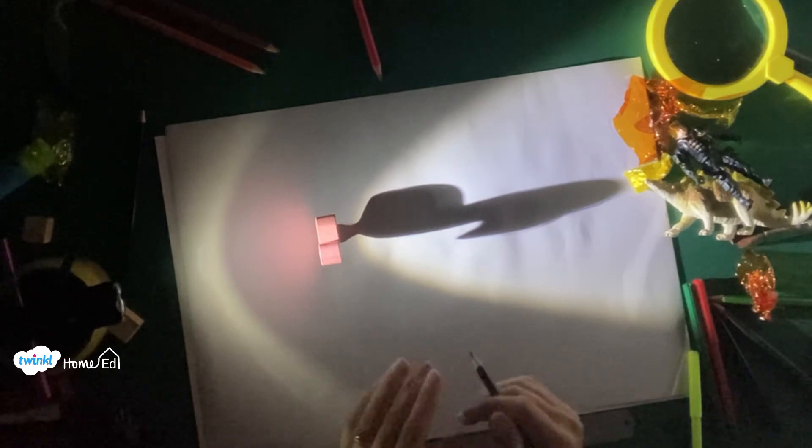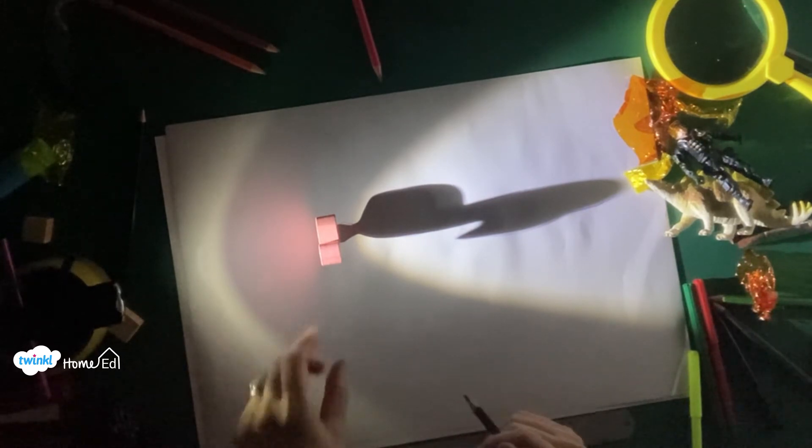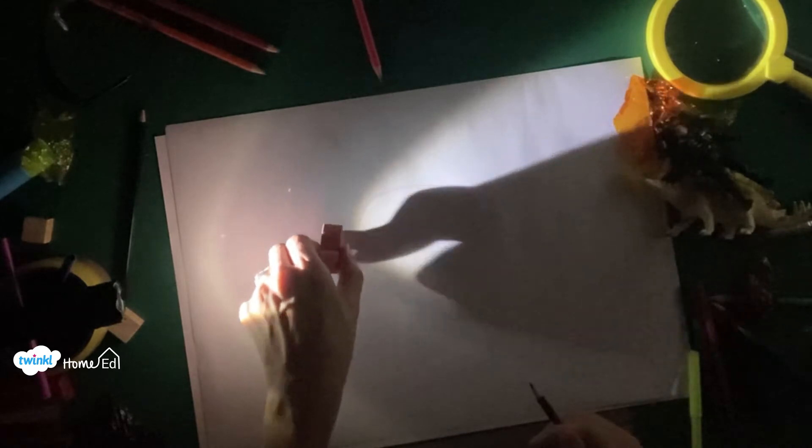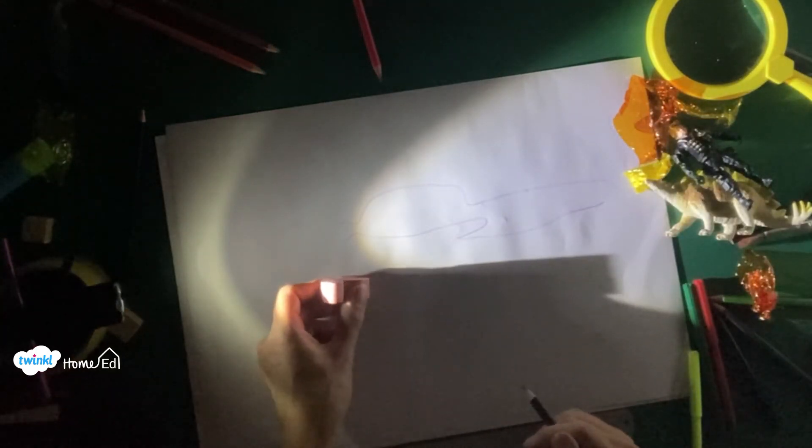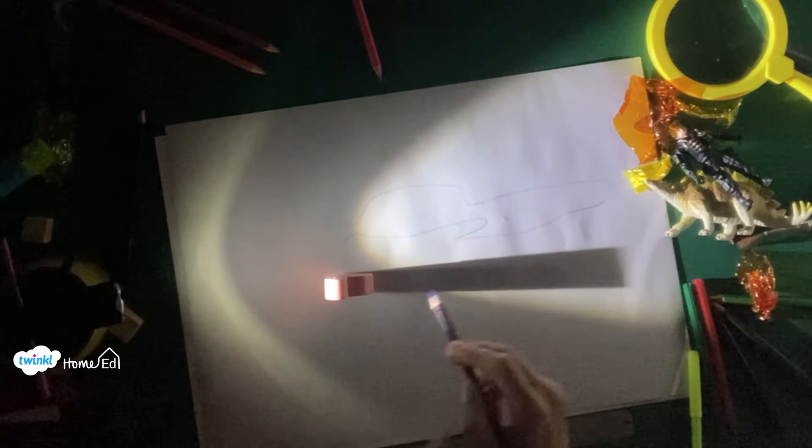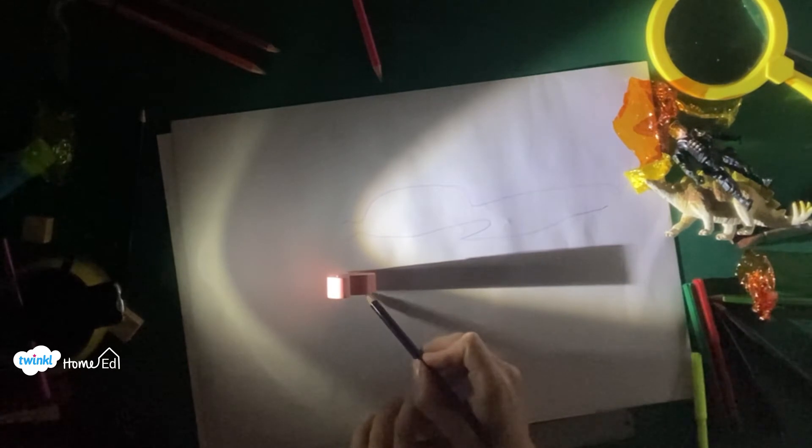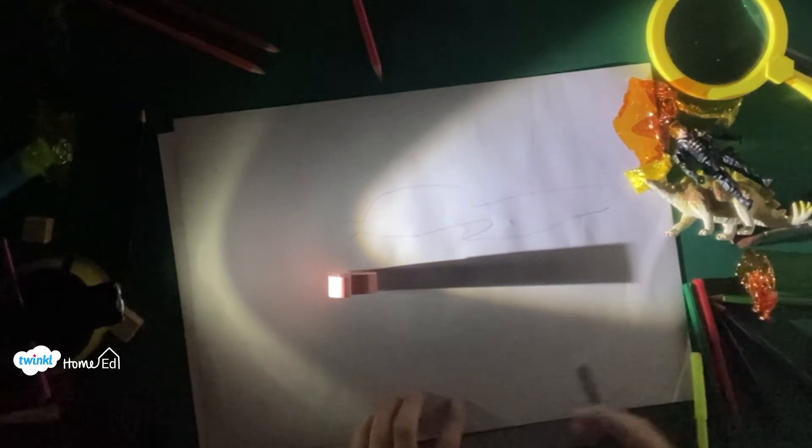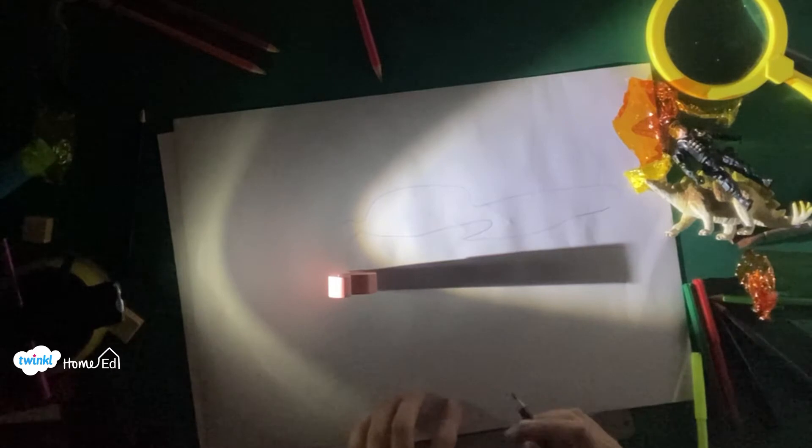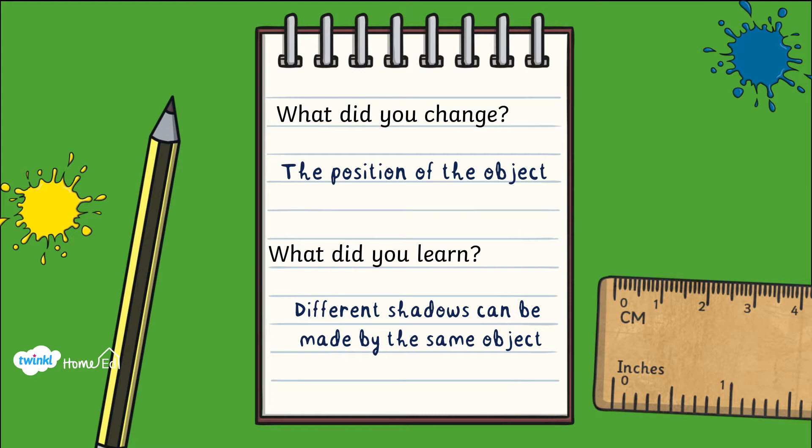Now what could we change with this experiment? Well I've already done how far away the light could go, so this time I'm actually going to change which way my object is facing. So I'm going to change the position of my object and you can just about see there that the object has actually made a rectangular shadow now. So that's something really interesting about shadows. They don't always make the same shape as the object. You can have lots of fun seeing what the most unusual shape you can make with your object is.